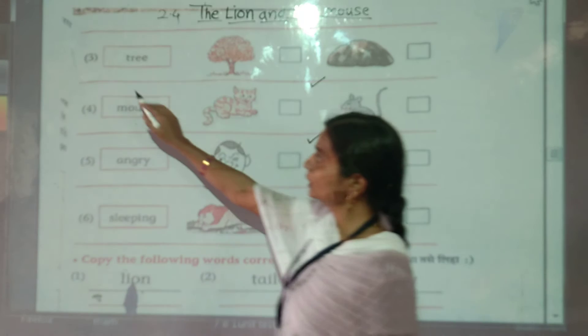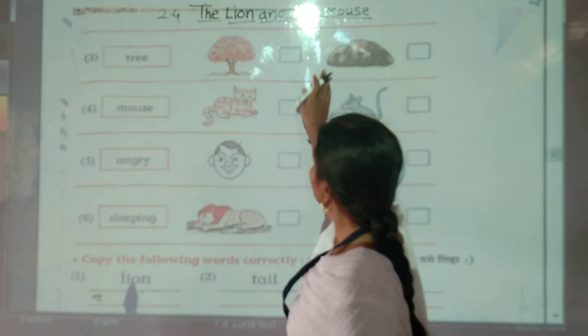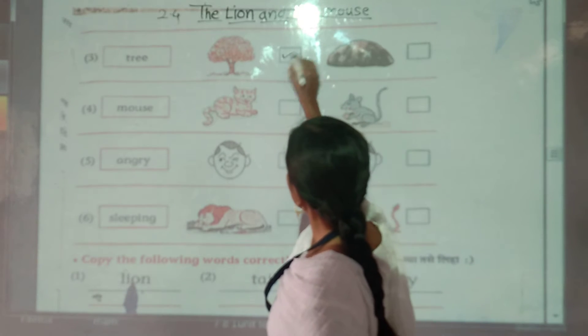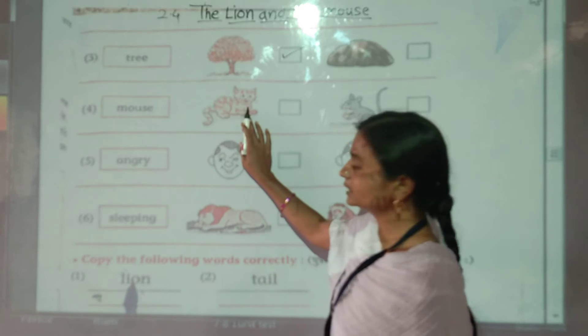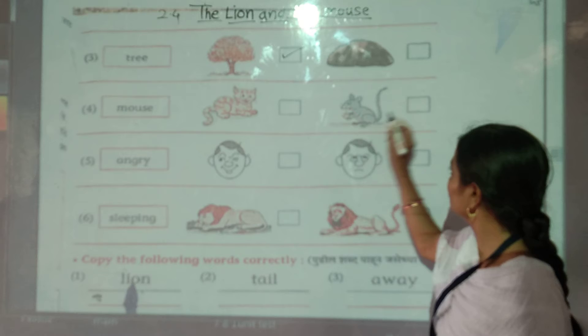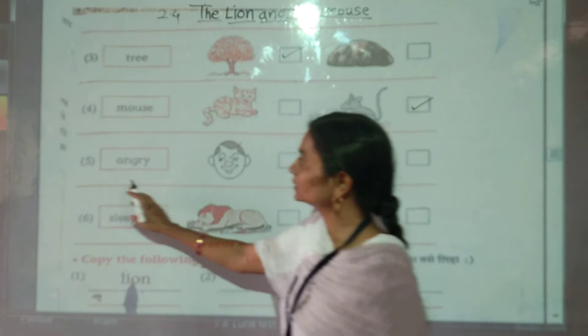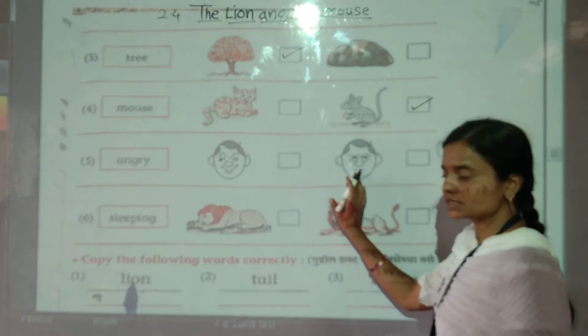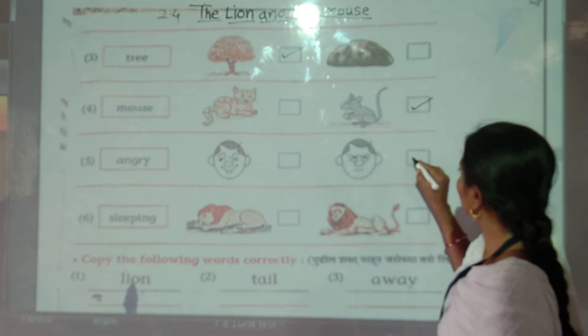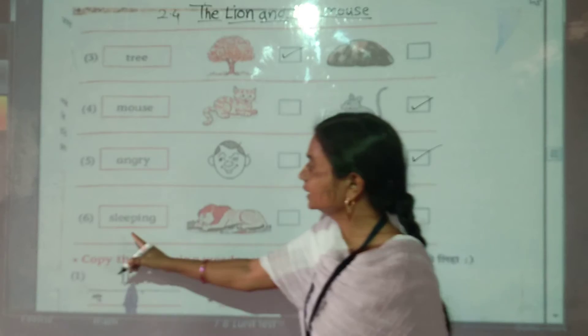Next part, number three. Here is the picture of tree, so tick here. Then fourth number, mouse. First is cat picture and here is the mouse. Then next, fifth, angry. Which one face is angry? This face is looking very angry, so now we will tick here.